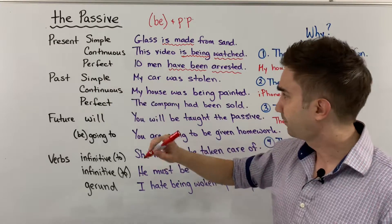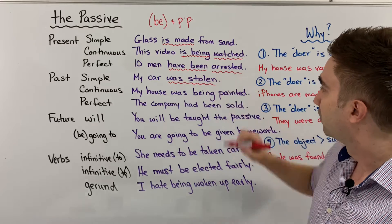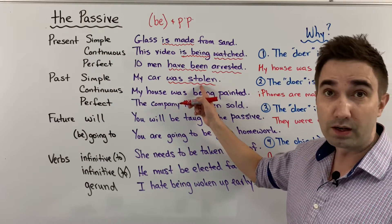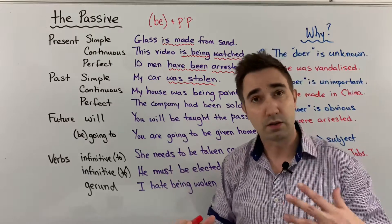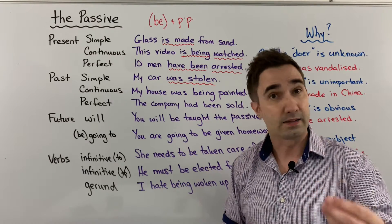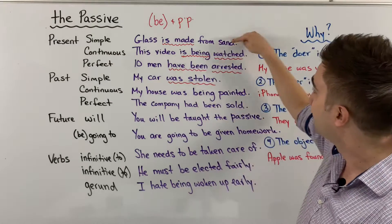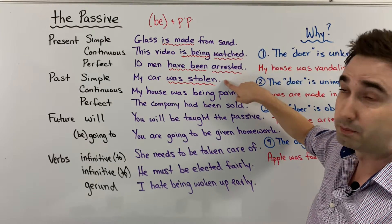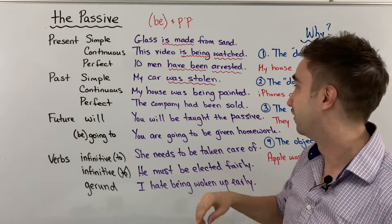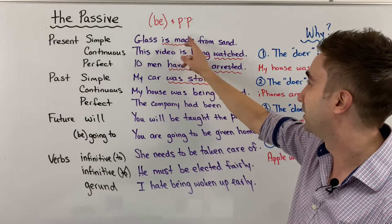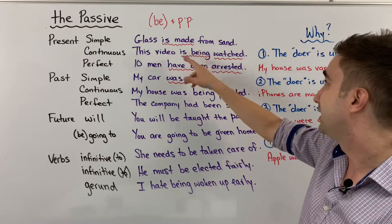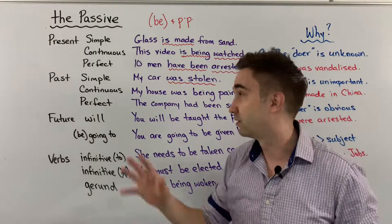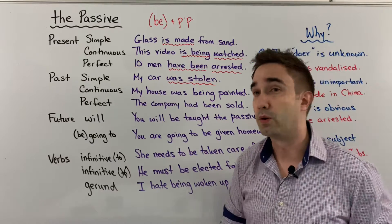Past simple: my car was stolen. Here we have be plus the past participle. Maybe your teacher has taught you the passive before, and you're probably going to see these two most often — present simple and past simple. But today you're getting all the different tenses. So these ones are easy: be plus PP. But continuous is 'is being,' and present perfect is 'have been arrested.' So here are some different forms for you.